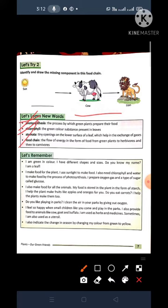Number 4 is food chain. The flow of energy in the form of food from green plants to herbivorous then to carnivorous. Students, just now only I have explained about the food chain also.